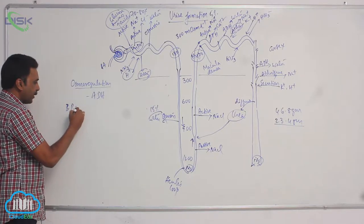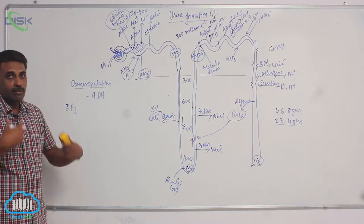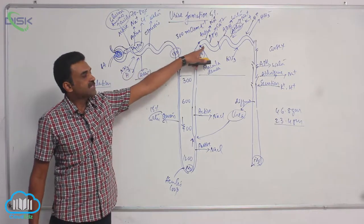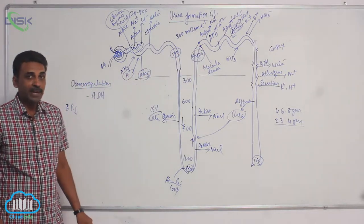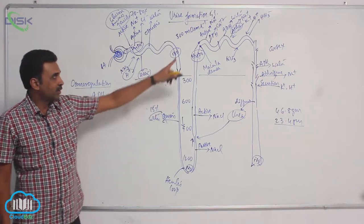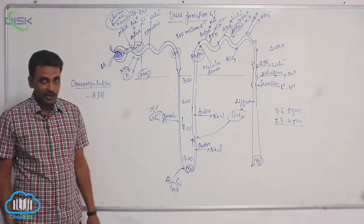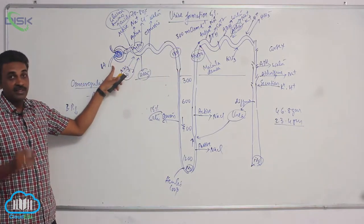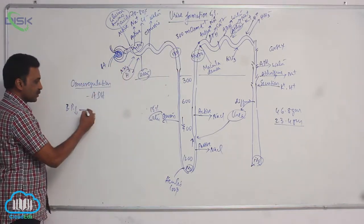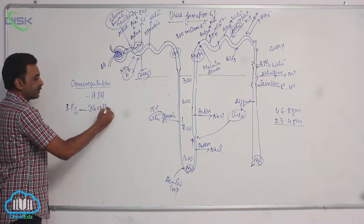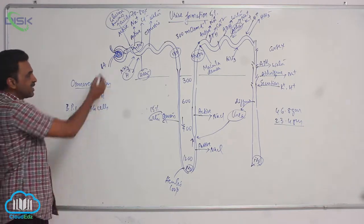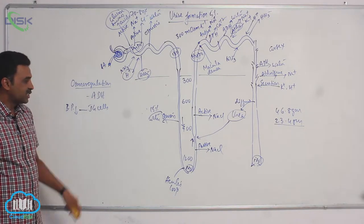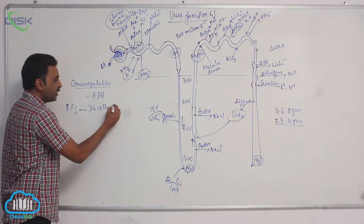Whenever blood pressure has come down, the macula densa detects that dipping blood pressure and it will stimulate the JG cells. So JG cells are stimulated. JG cells are present in the wall of the efferent arteriole. So JG cells will release renin.